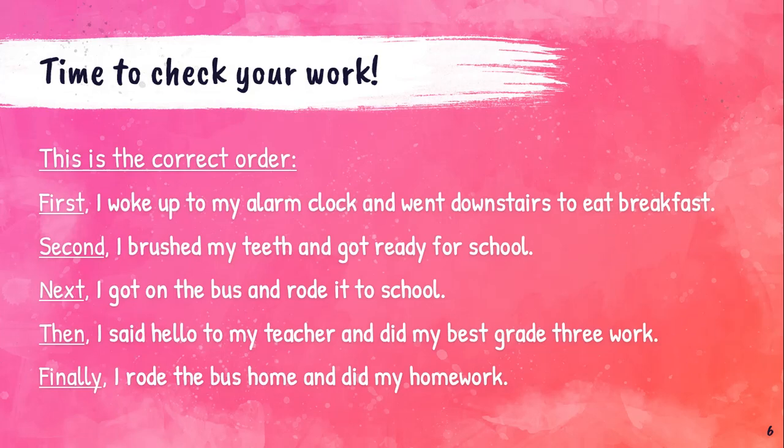Let's check your work. The correct order is: First, I woke up to my alarm clock and went downstairs to eat breakfast. Second, I brushed my teeth and got ready for school. Next, I got on the bus and rode it to school. Then I said hello to my teacher and did my best grade three work. Finally, I rode the bus home and did my homework. First and finally need to be in the right place; next and then can be mixed up.